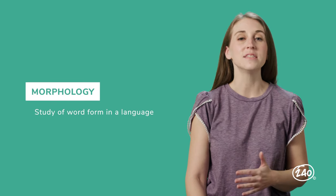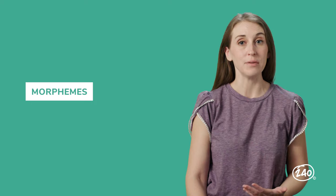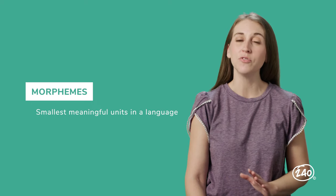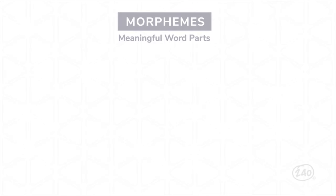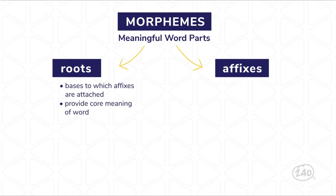Let's zero in on morphology. Morphology is the study of word form in a language. Words are formed with morphemes, which are the smallest meaningful units in a language. We can categorize morphemes as roots and affixes. Roots are the basis to which affixes may be attached — they provide the core meaning of a word. A root may be free, meaning it can stand alone as its own word, or bound, meaning it cannot stand alone.